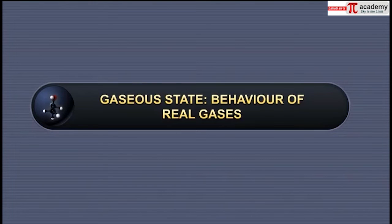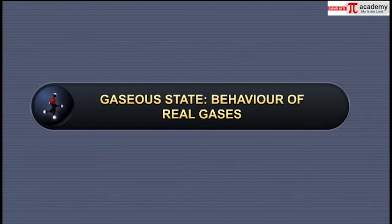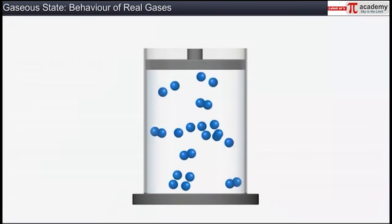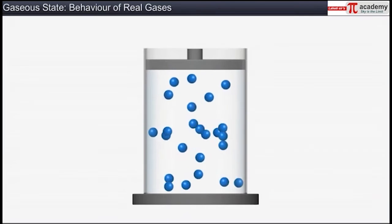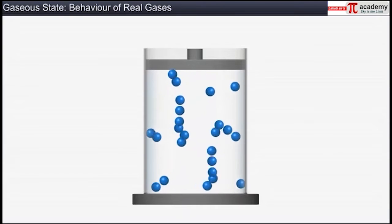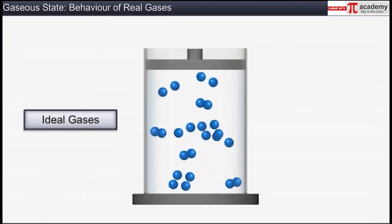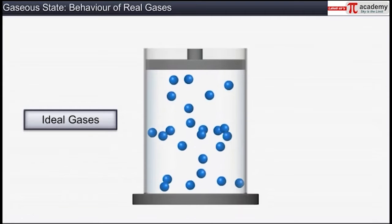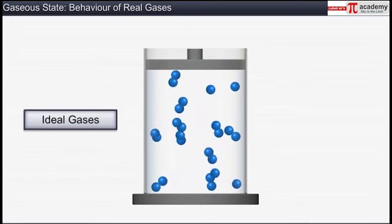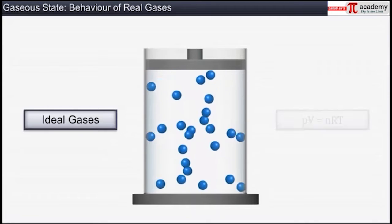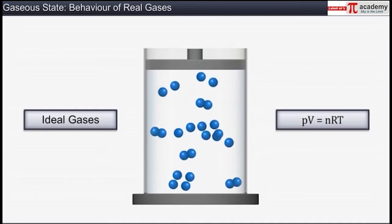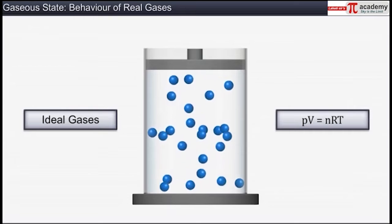In this module, you will learn about the deviation of real gases from ideal gases. Gases that obey the ideal gas equation are called ideal gases. The ideal gas equation is PV = nRT.